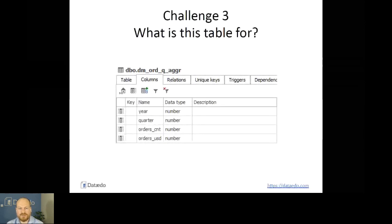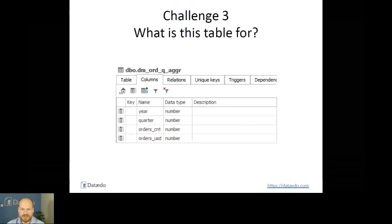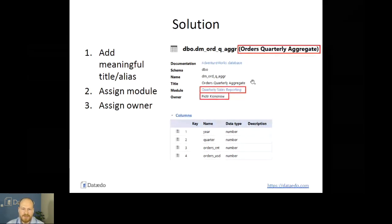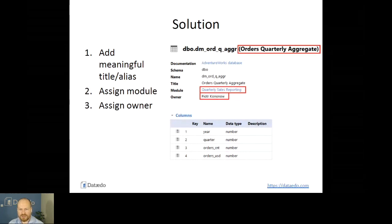Challenge number three: what is this table for? I found a table called 'DM_QAGGR' — totally unclear what it is for. You'll get this question quite often when going through a database. My solution is to provide a meaningful title alias, assign a module, and assign an owner. Now it makes much more sense: you know it's an aggregate for quarterly orders, it was used for something called 'quarterly sales reporting,' and when you provide an owner, you know who to talk to. Having this information is so much easier.